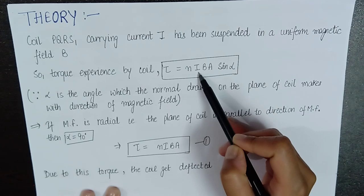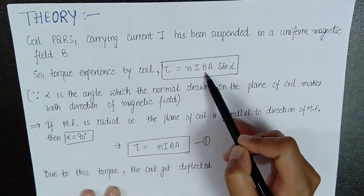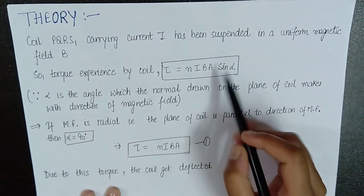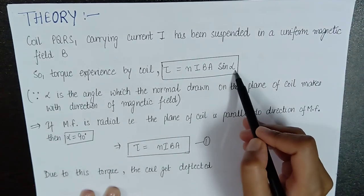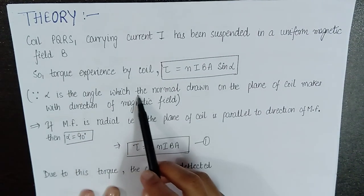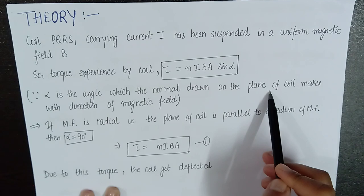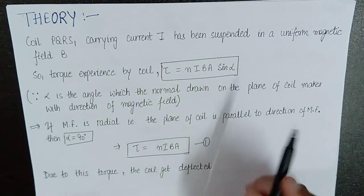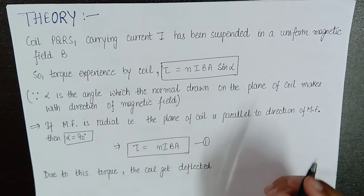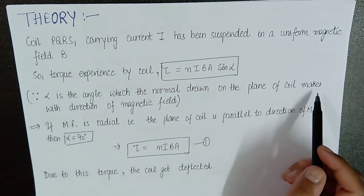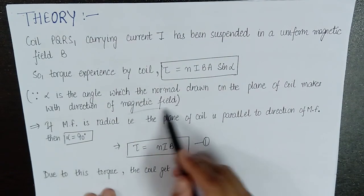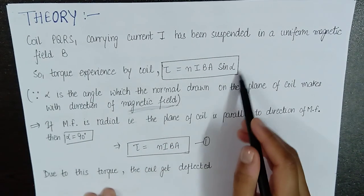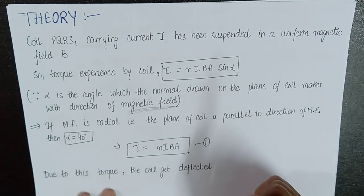I is the current flowing through the coil and B is the magnetic field in which that coil is placed. And A is the area and sin of alpha, where alpha is the angle which the normal drawn on the plane of the coil makes with the direction of magnetic field.